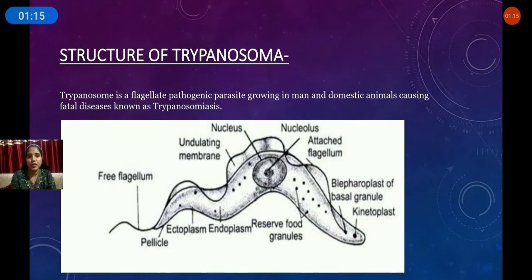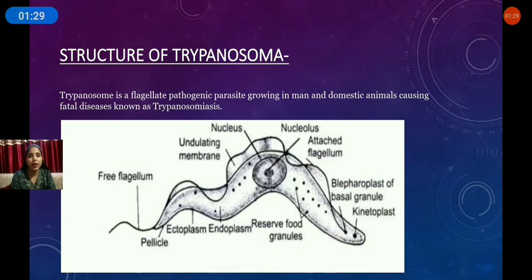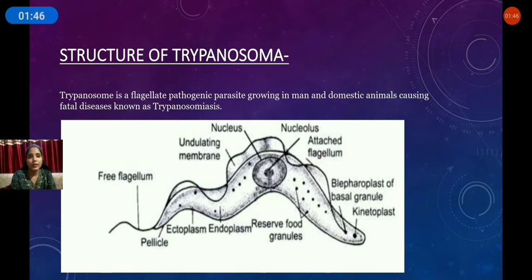There are many varieties of trypanosoma — trypanosoma cruzi, trypanosoma gambians, and others. We will talk generally about trypanosoma. Trypanosomiasis is also called sleeping sickness, or African sleeping sickness. If you see the structure, you will see this elongated structure.